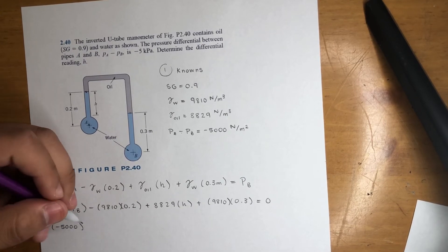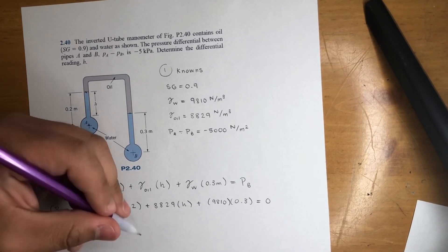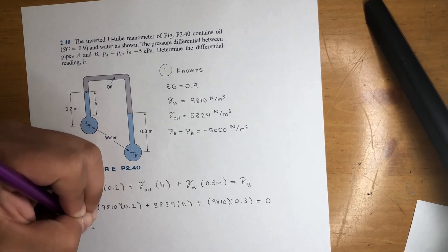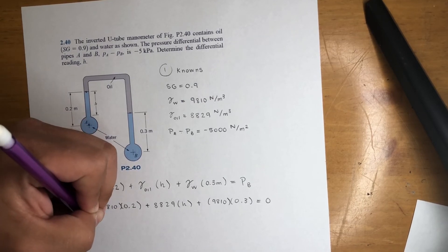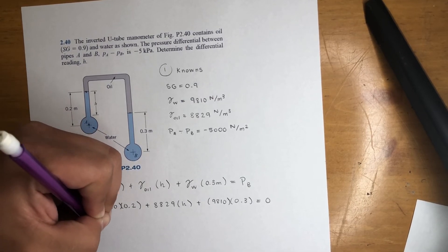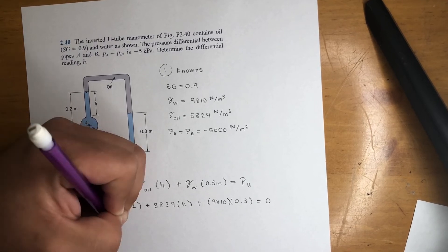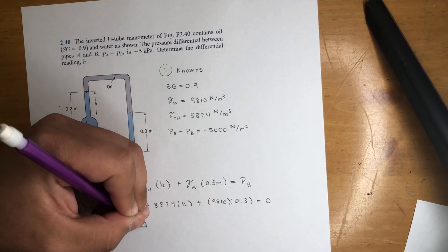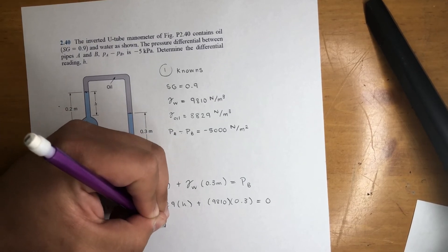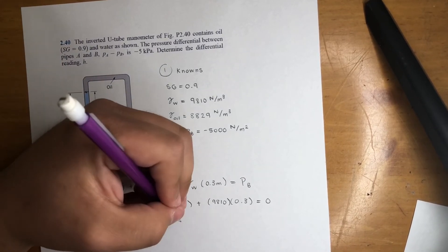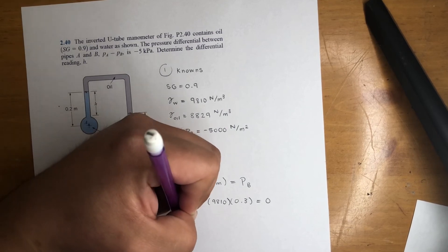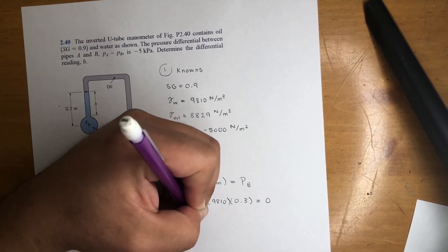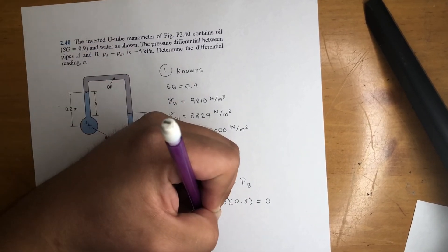It's easy to get confused with signs. So always use parentheses. Minus, multiply these two, you'll get 1962 plus 8829 times H plus 2943. That's equal to zero.